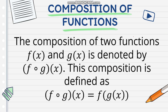Now, what is composition of functions? The composition of two functions, f of x and g of x, is denoted by f circle g of x. This composition is defined as f of g of x. We have two functions, f of x and g of x. Composition of functions means we're using one of the functions as the input of the other function. So in f of g of x, g of x will be the input of the function f of x — we substitute g of x into f of x and then simplify.